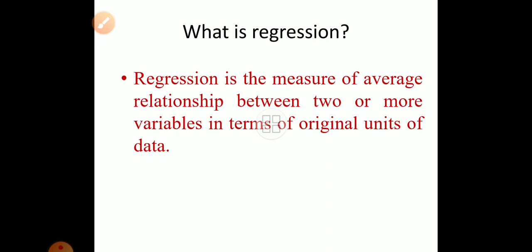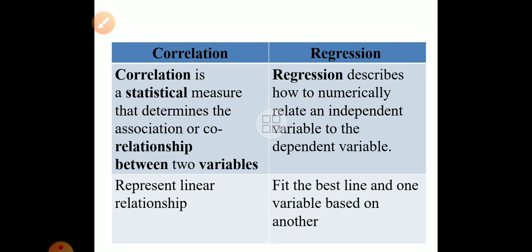Regression is the measure of average relationship between two or more variables in terms of original units of data. Now in this slide, the difference between correlation and regression is given, because that may be asked in the examination. Correlation is a statistical measure that determines the association or relationship between two variables — how much they are associated: positive, negative, or no association. It also represents a linear relationship. In case of regression, it describes how to numerically relate an independent variable to the dependent variable.